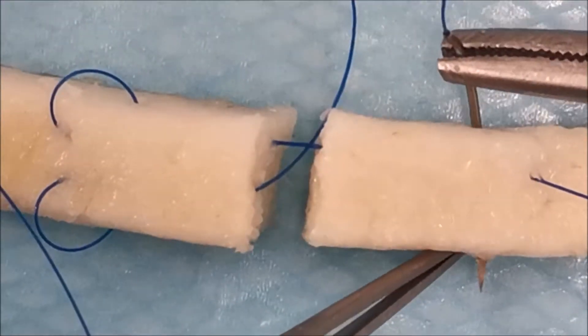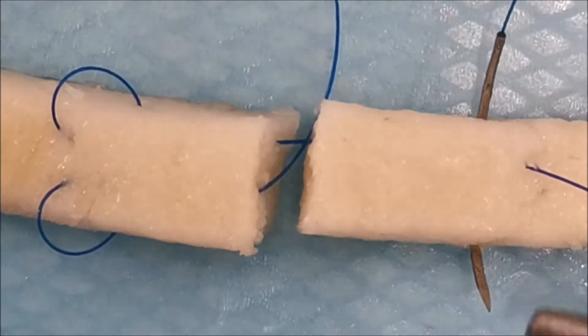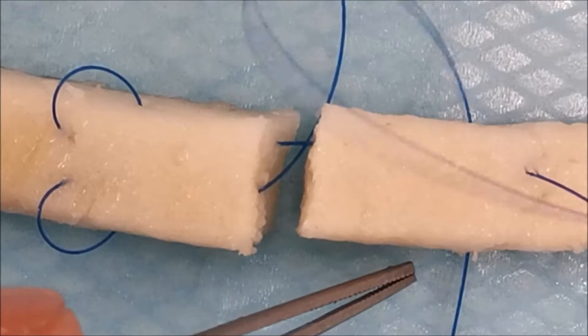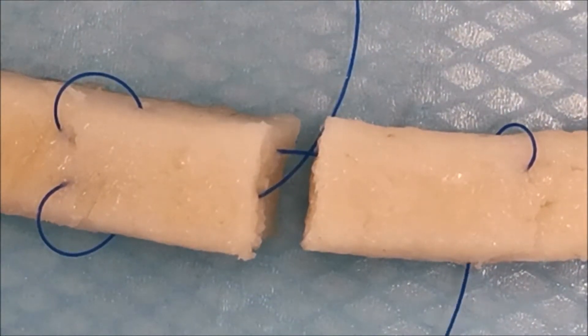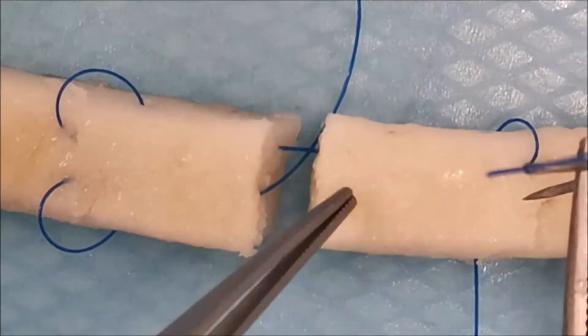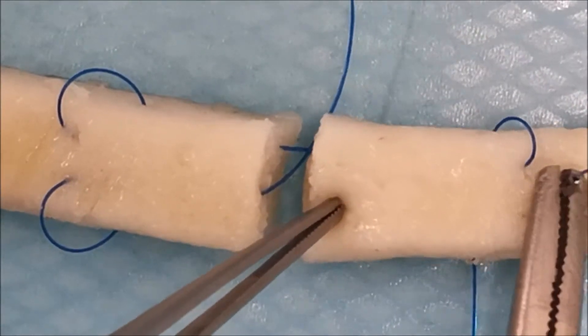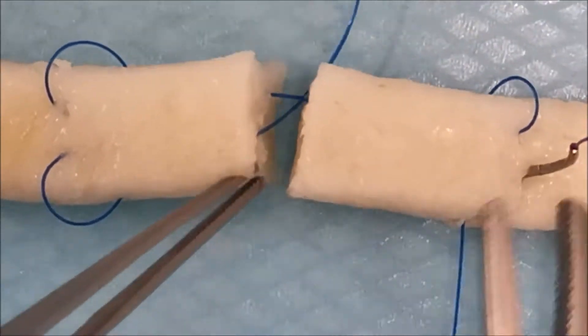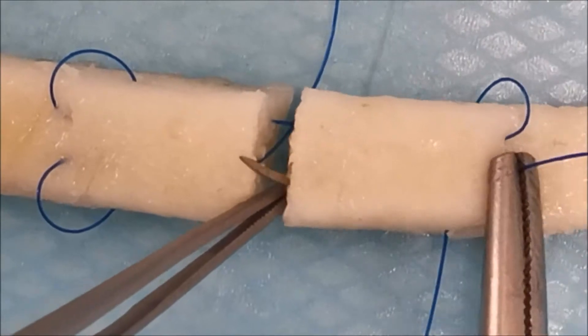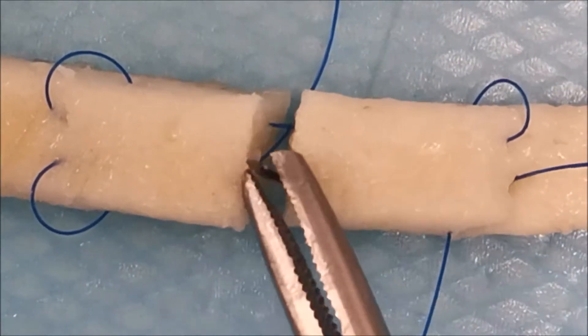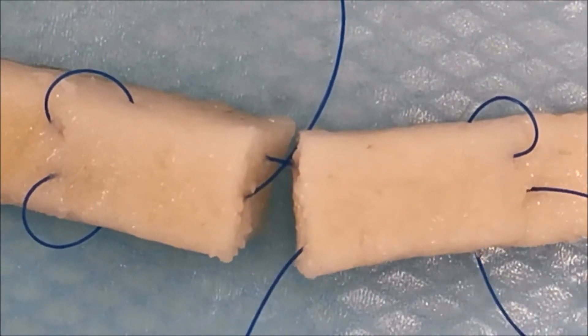It's important to take the transverse bite closer to the repair site as opposed to the longitudinal bite which is away. This is important in order to create a grasping loop as opposed to a loop which does not grasp.